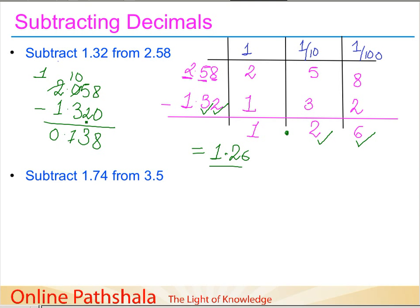If anyone is confused about how 1.32 can be written as 1.320, please refer to the previous videos already explaining this. So the result is 0.738. The decimal is placed by counting from the rightmost column — 1000ths, 100ths, and 10ths place — so we shift 1, 2, and 3 columns from the right, placing the decimal the same way in both the question and the answer.